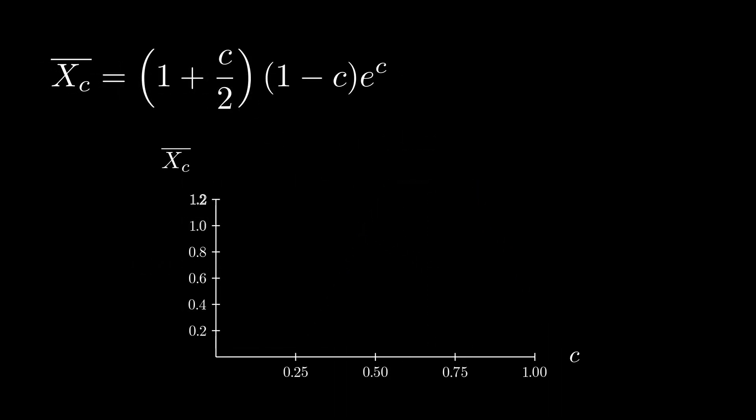We now have the average score as a function of the cutoff, which we see has a single maximum. Solving for the max yields an optimal cutoff of about 0.303.